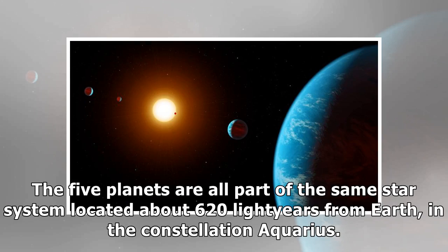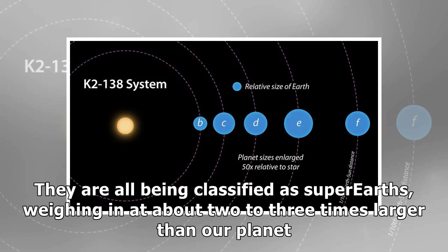The five planets are all part of the same star system located about 620 light-years from Earth, in the constellation Aquarius. They are all being classified as super-Earths, weighing in at about two to three times larger than our planet.